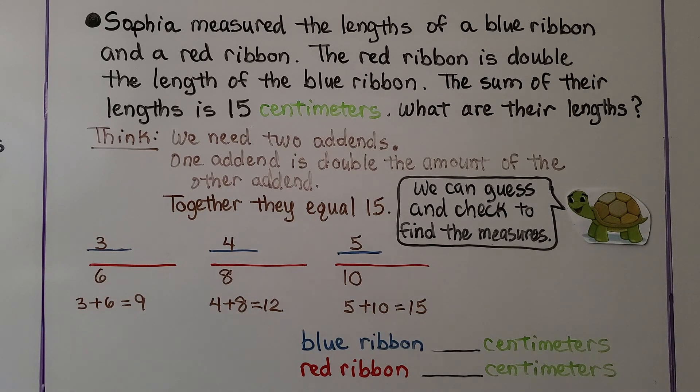We have a word problem. It says, Sophia measured the lengths of a blue ribbon and a red ribbon. The red ribbon is double the length of the blue ribbon. The sum of their lengths is 15 centimeters. What are their lengths? So we think we need two addends. One addend is double the amount of the other addend and together they equal 15.